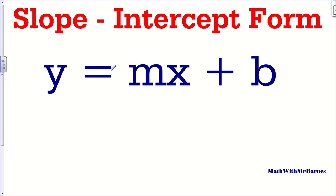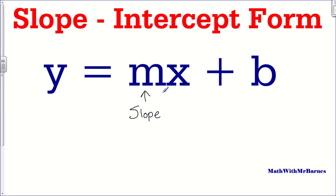Alright guys, so Y equals MX plus B — probably the most well-known form of a line. It's really important if you're going towards calculus and pre-calculus in school. You need to be able to figure this stuff out. So Y equals MX plus B — first of all, let's explain how this works. This M here, that is the slope.